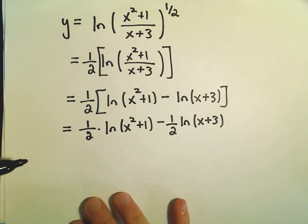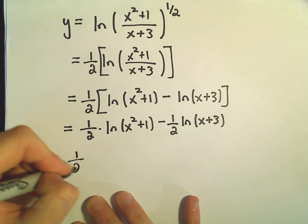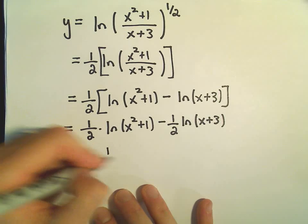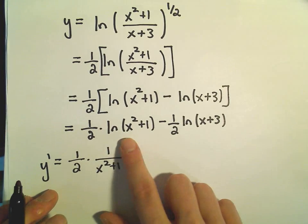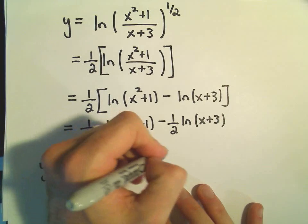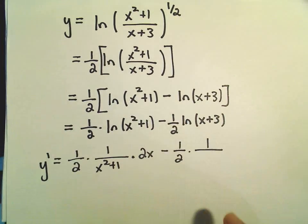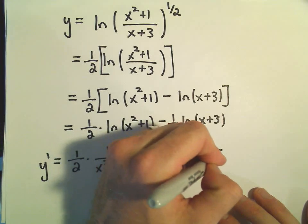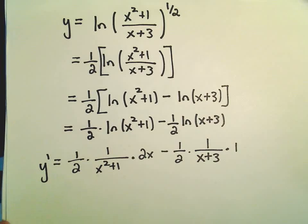And now this is finally where I'm going to take the derivative. So the 1 half will come along. We'll get 1 over x squared plus 1, and then we'll have to use the chain rule. So the derivative of x squared plus 1 is going to be 2x, and then minus 1 over 2. The derivative of ln of x plus 3 will just be 1 over x plus 3. The derivative of the inside will just be multiplication by 1.